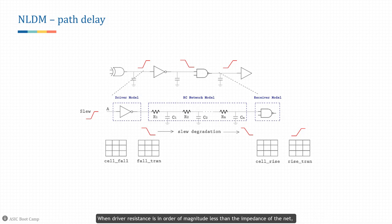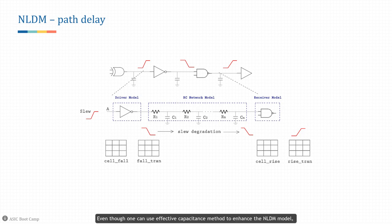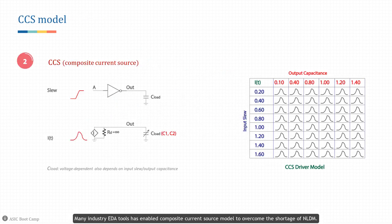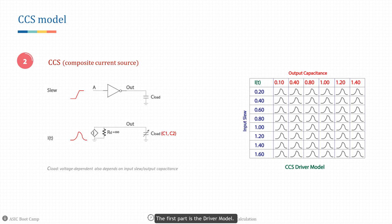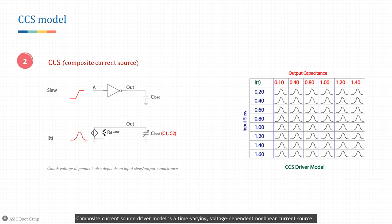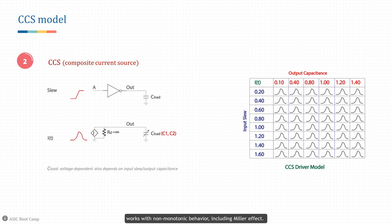When driver resistance is an order of magnitude less than the impedance of the net, the driver model requires more granularity. Even using the effective capacitance method to enhance NLDM, it still cannot satisfy the accuracy requirement. Many industry EDA tools have enabled the Composite Current Source (CCS) model to overcome the shortages of NLDM. The CCS model consists of two parts. The first part is the driver model — a time-varying, voltage-dependent, nonlinear current source. It works with any net topology including high-impedance nets, works with complex cells including stacked transistors, and works with non-monotonic behavior including the Miller effect.